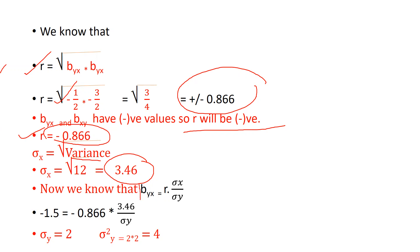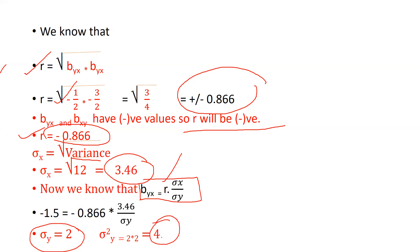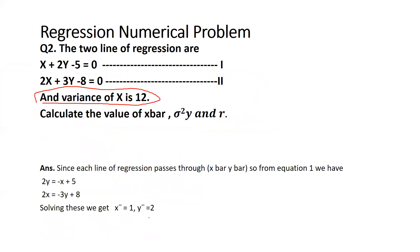Now we know the formula byx equal to r multiplied by sigma y divided by sigma x. So we put byx equal to minus 1/2, r equal to 0.866, and sigma x equal to 3.46, then solve for sigma y. We get sigma y equal to 2. And when we calculate sigma squared y, that would be 2 multiplied by 2, so the final solution of sigma squared y is 4.